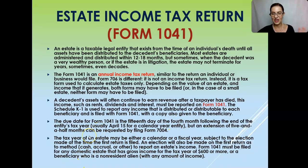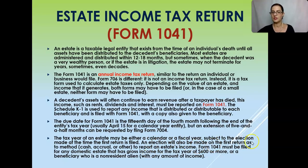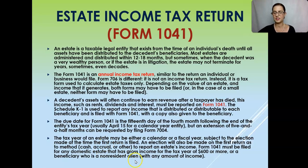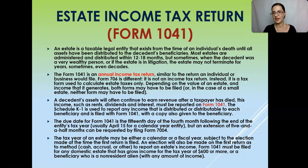The tax year of an estate may be either a calendar or a fiscal year, subject to the election made when the first return is filed. An election is also made on the first return as to the method of reporting the estate's income — cash, accrual, or other. An estate can use the cash method, the accrual method, or any other method available to businesses, such as the hybrid method or the crop method if applicable. Most of the time it's going to be cash, but other acceptable methods are available.